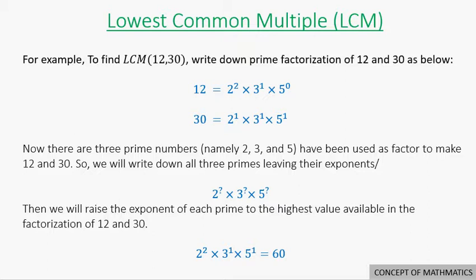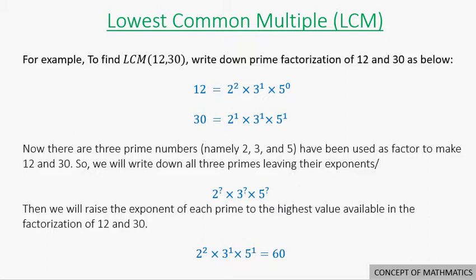There are 3 prime numbers — namely 2, 3, and 5 — that have been used as factors to make 12 and 30. So we will write down all 3 primes and then determine their exponents. The highest exponent of 2 between the factors of 12 and 30 is 2, so we raise 2 to the second power. Similarly, the exponents of 3 and 5 will be 1 and 1 respectively, as those are the highest available powers. This numerical expression evaluates to 60.